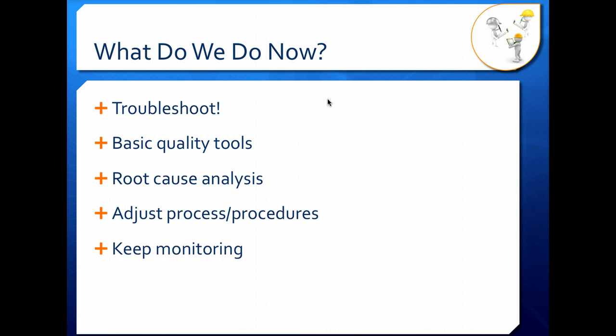The important thing to remember is now that you've found the problem, you've identified your out of control behavior and you're doing something about it, keep monitoring your process. Don't stop doing that. That's what your control chart is for. It tells you, is your process in control or out of control?